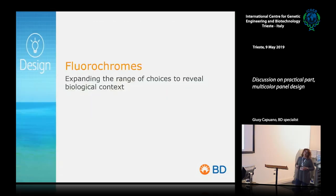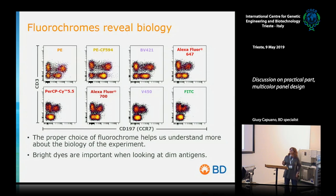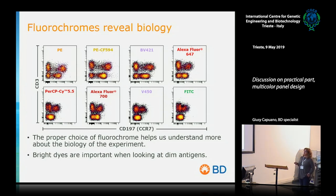We start from the reagent. It's preferable to know what we use because the choice of fluorochrome dye is very important to reveal the biology of the sample. In these slides you can see different plots using CD3 and CD197 in different fluorochromes, from very bright to dim.